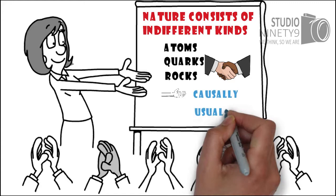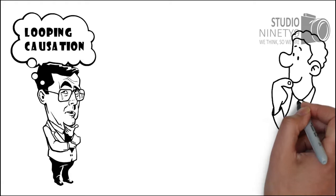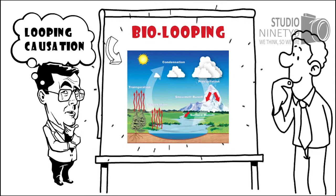Some forms of nature can have a looping causation, which Hacking calls bio-looping. An example of an indifferent kind of bio-looping is the water cycle.